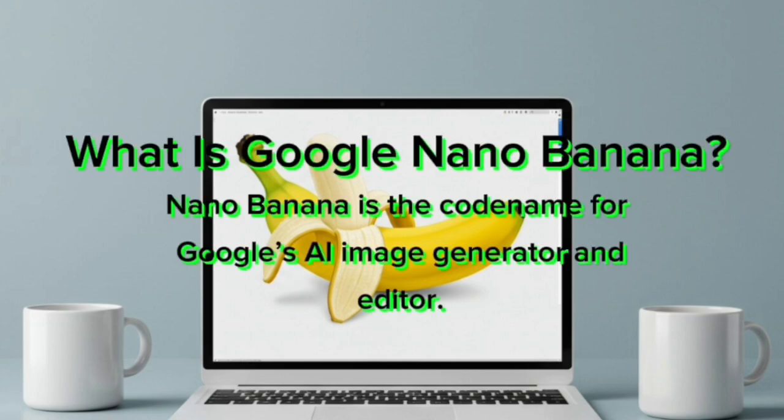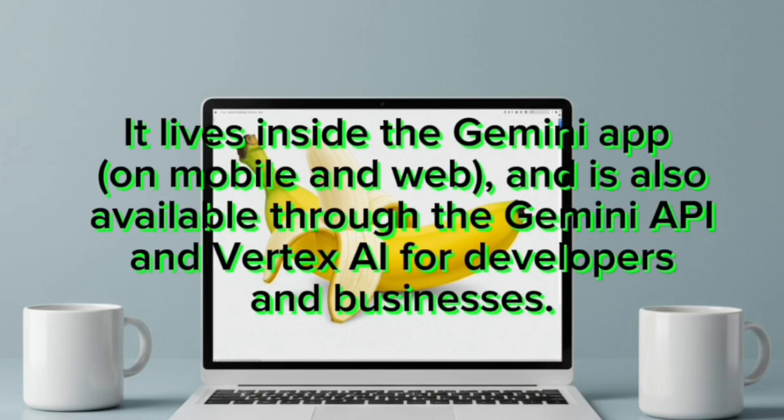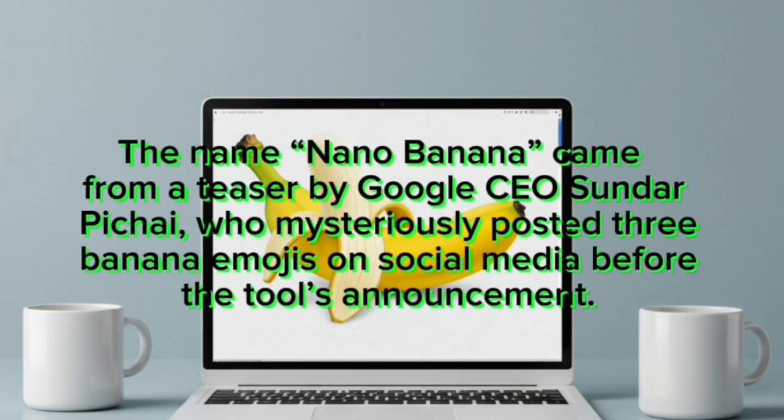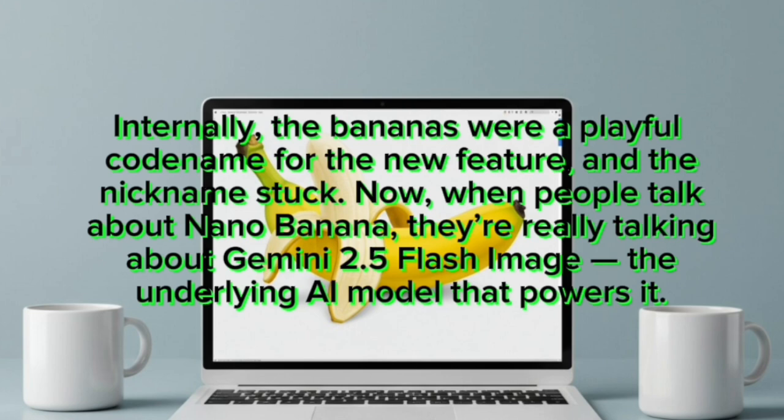What is Google Nano-Banana? Nano-Banana is the codename for Google's AI image generator and editor. It lives inside the Gemini app on mobile and web, and is also available through the Gemini API and Vertex AI for developers and businesses. The name Nano-Banana came from a teaser by Google CEO Sundar Pichai, who mysteriously posted three banana emojis on social media before the tool's announcement. Internally, the bananas were a playful codename for the new feature, and the nickname stuck.